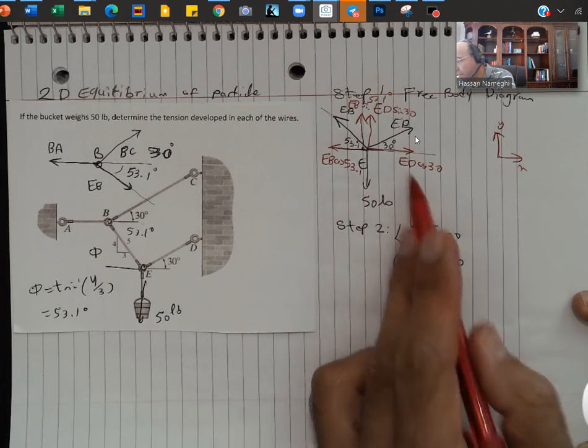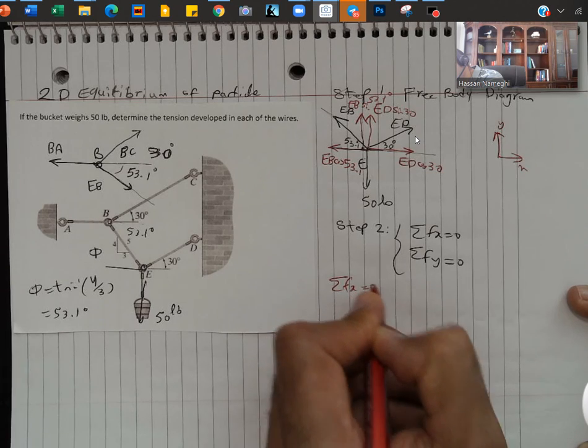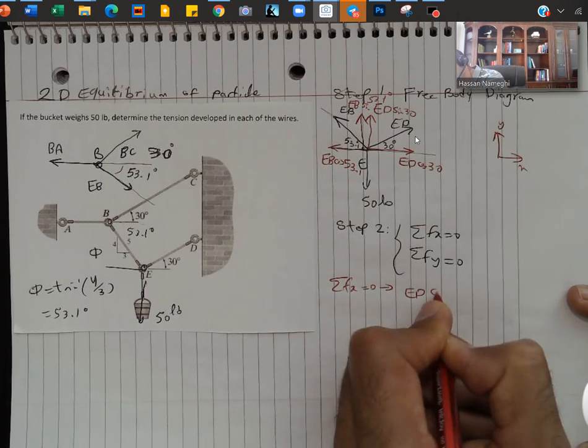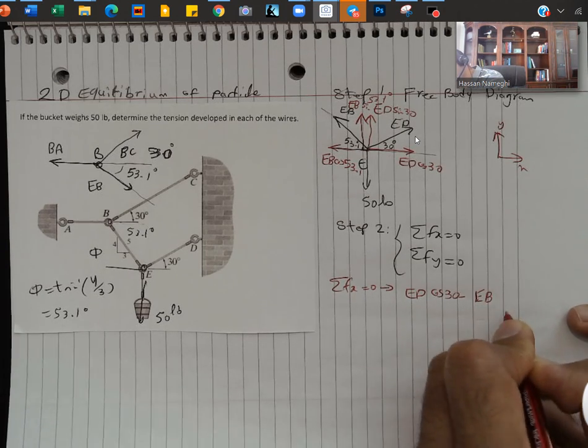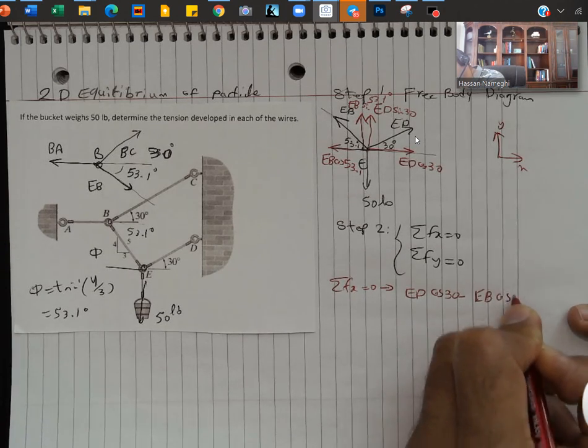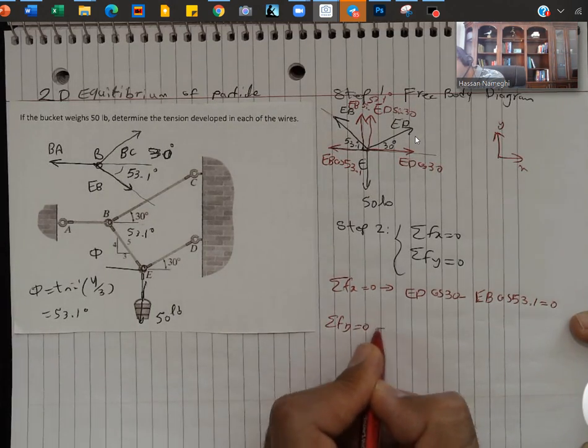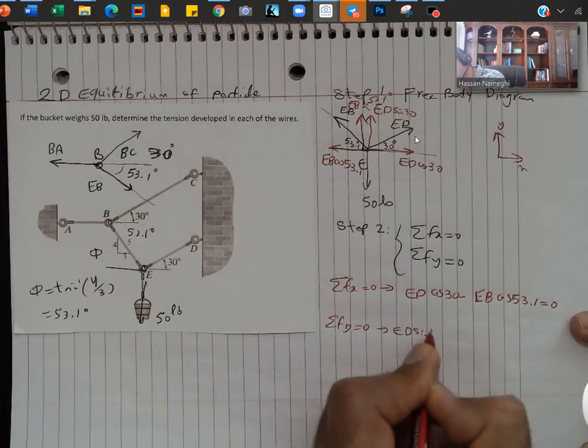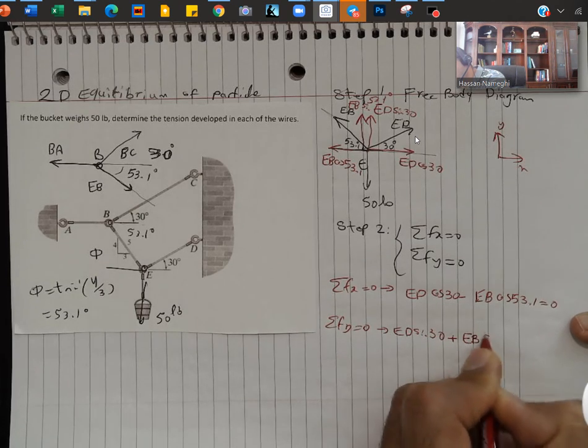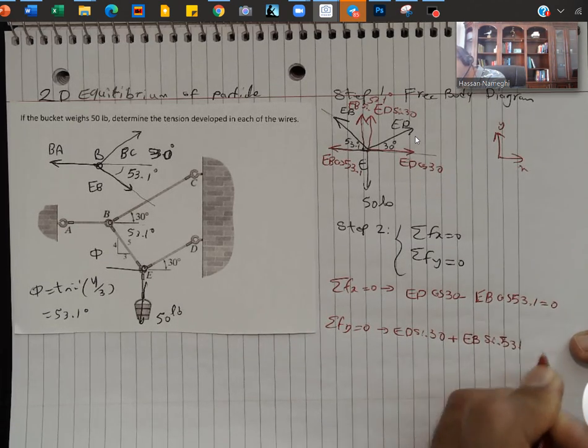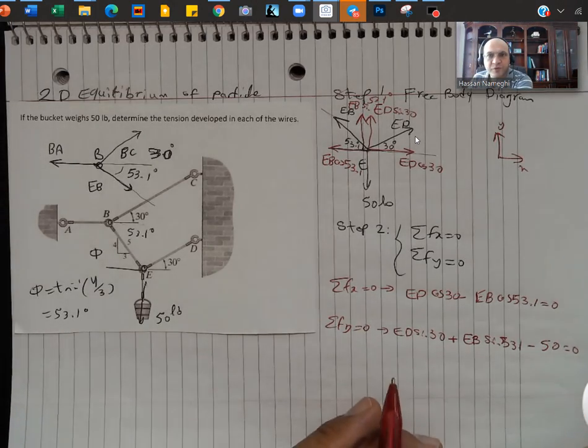Now I can write the equations. I have everything that I needed. So sum of Fx equal to 0: on the X I have ED cosine 30 minus EB cosine 53.1 equal to 0. On the Y we have ED sine 30 plus EB sine 53.1 minus 50, that's the weight of the bucket going down, equal to 0.